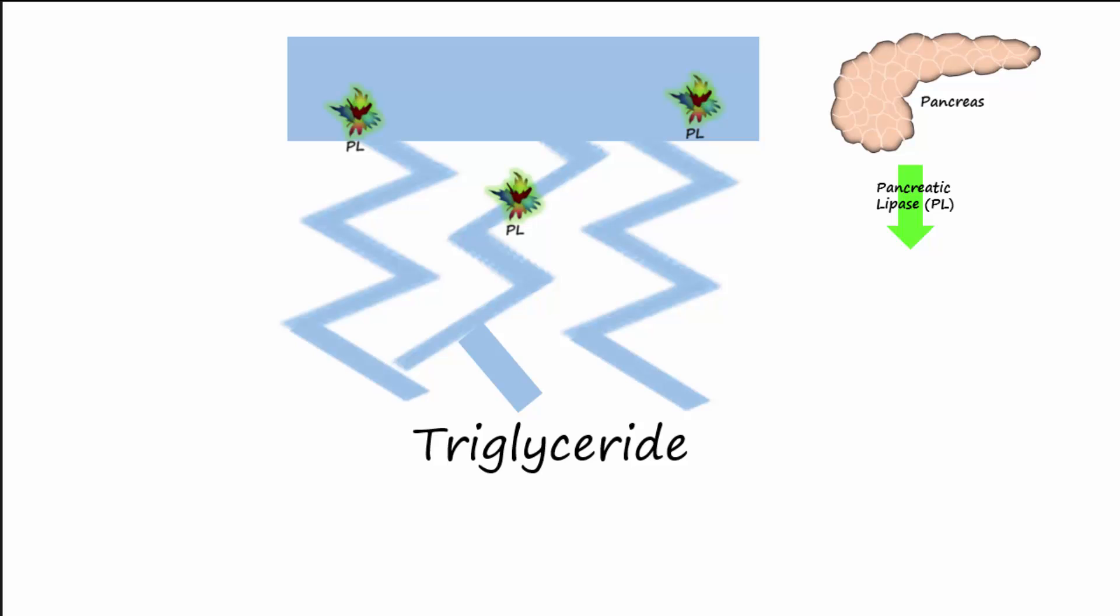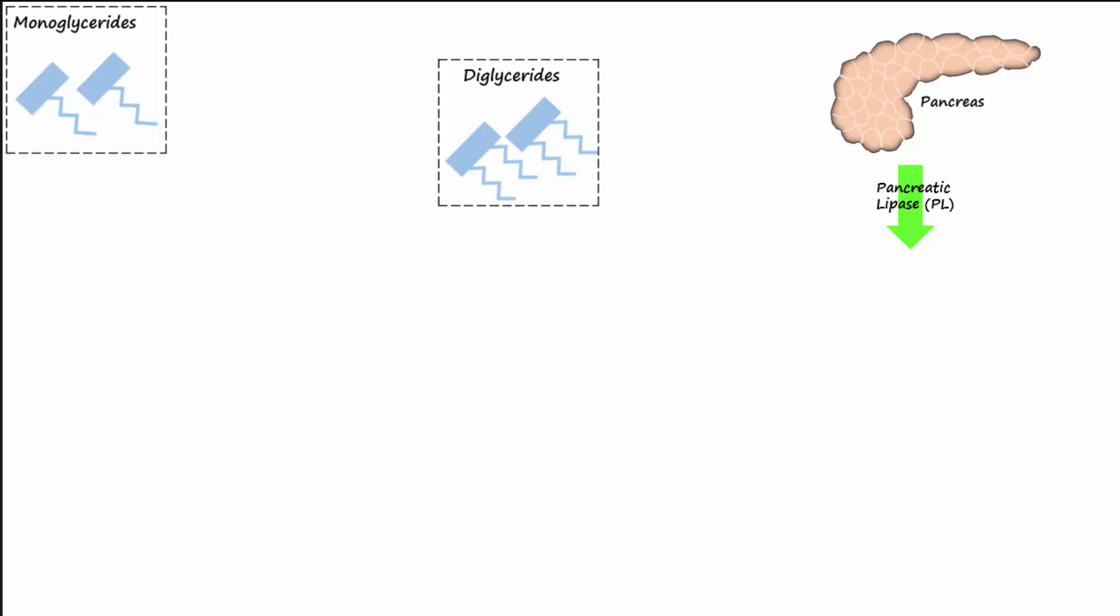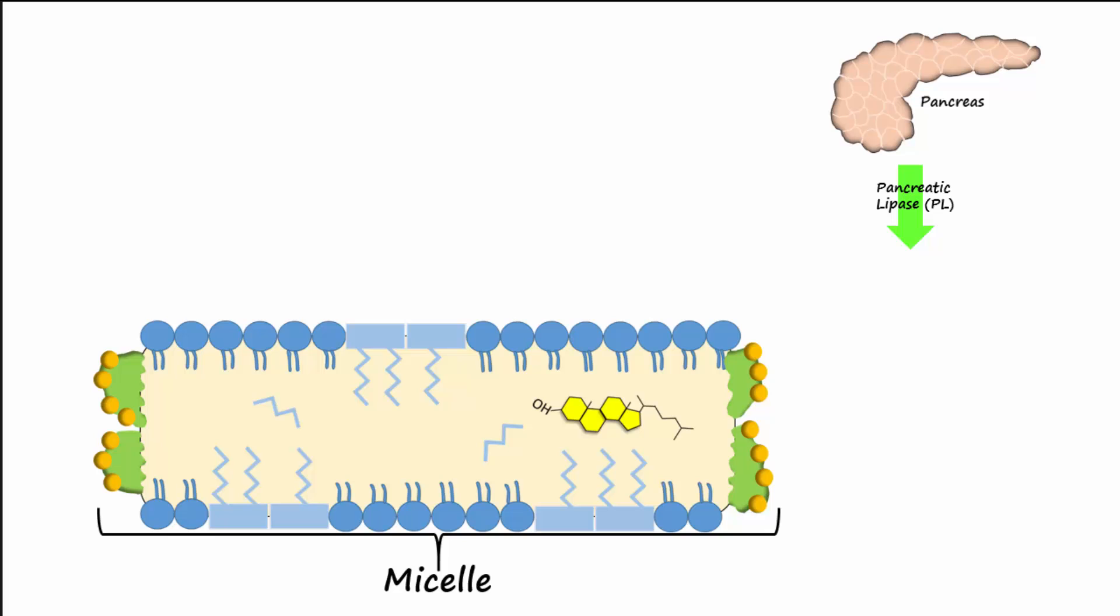Lipases released from the pancreas into the duodenum will break down the triglycerides of fat into monoglycerides, diglycerides, and free fatty acids. Cholesterol, phospholipids, bile salts, monoglycerides, diglycerides, and free fatty acids all come together to form a special structure called a micelle. Let's take a closer look at the structure of the micelle.